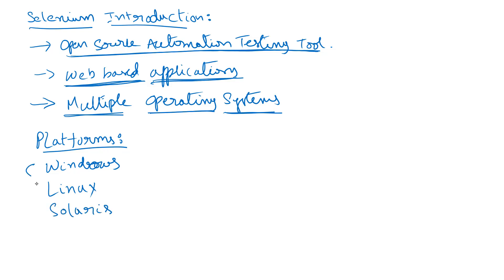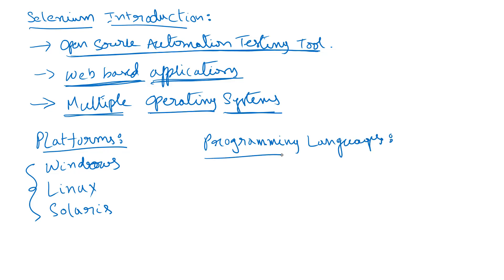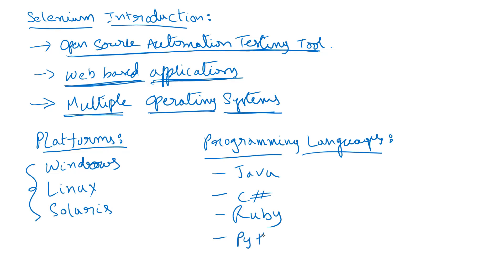What programming languages can we use to develop Selenium scripts? There are many programming languages supported by Selenium, and some of them are Java, C#, Ruby, Python, PHP, and Perl. These are some of the programming languages using which we can develop Selenium scripts.